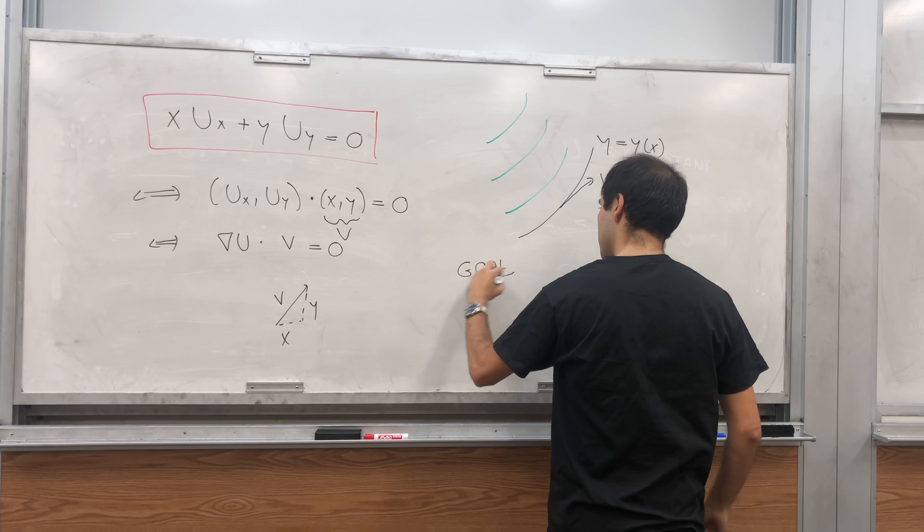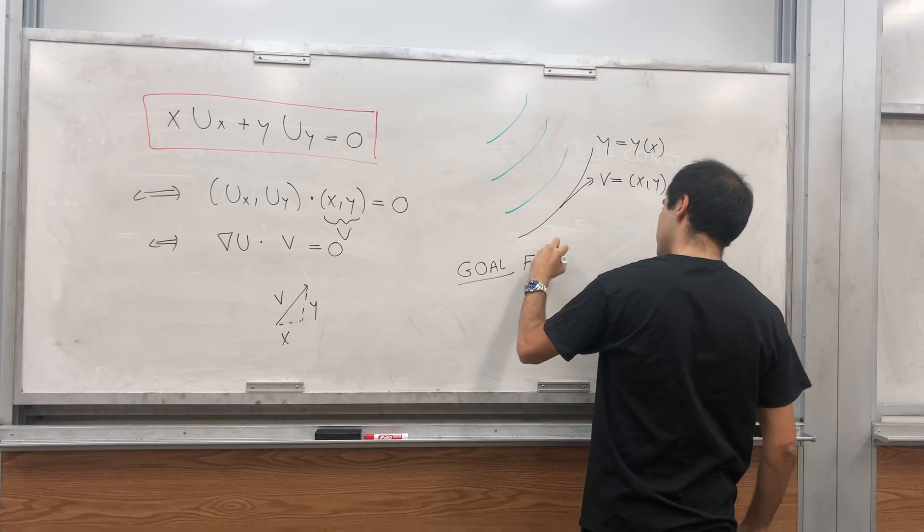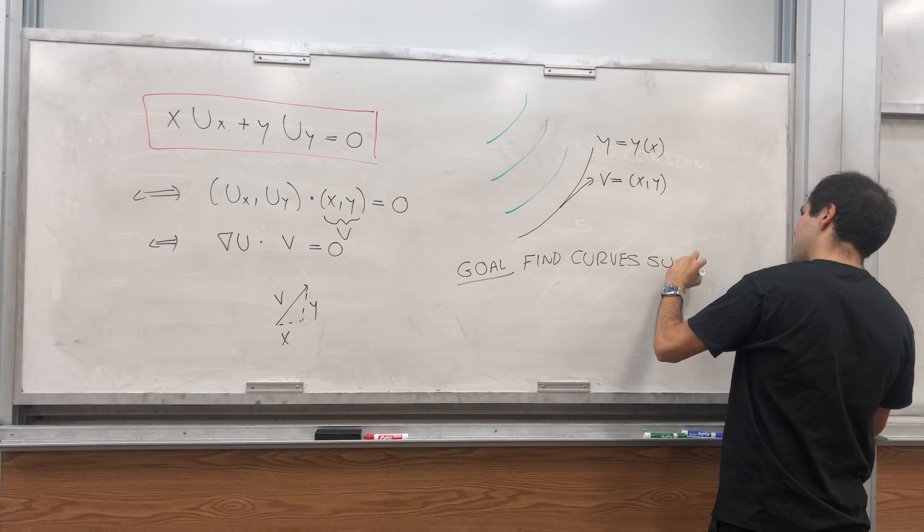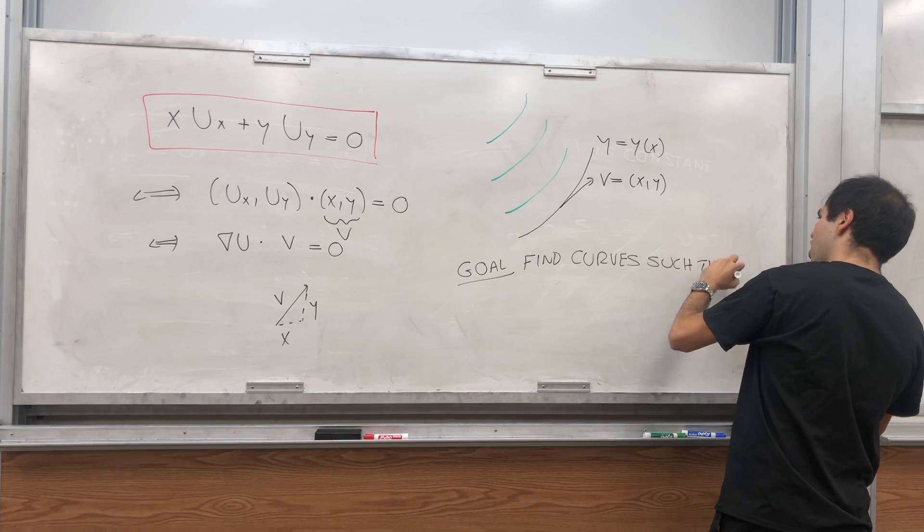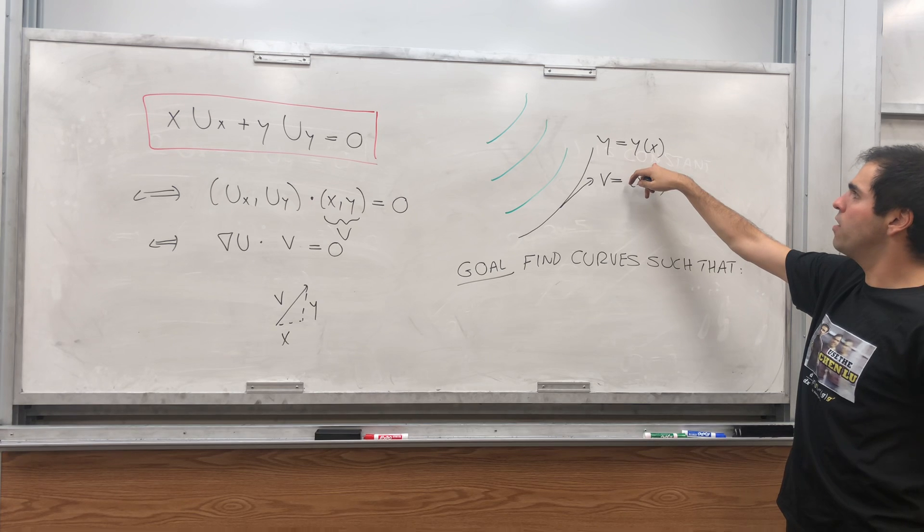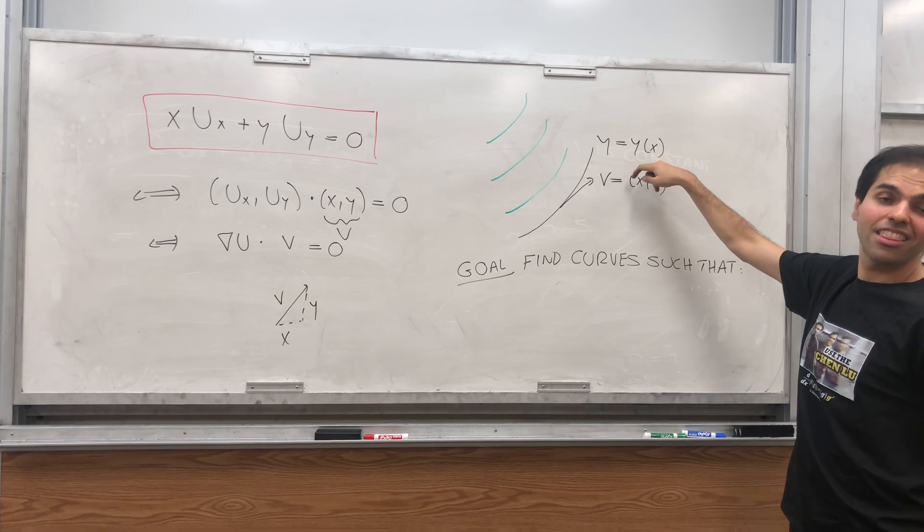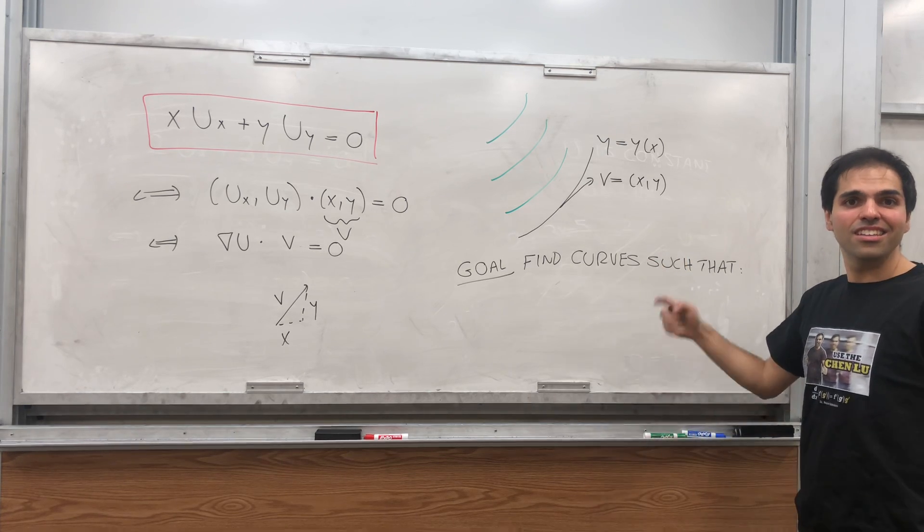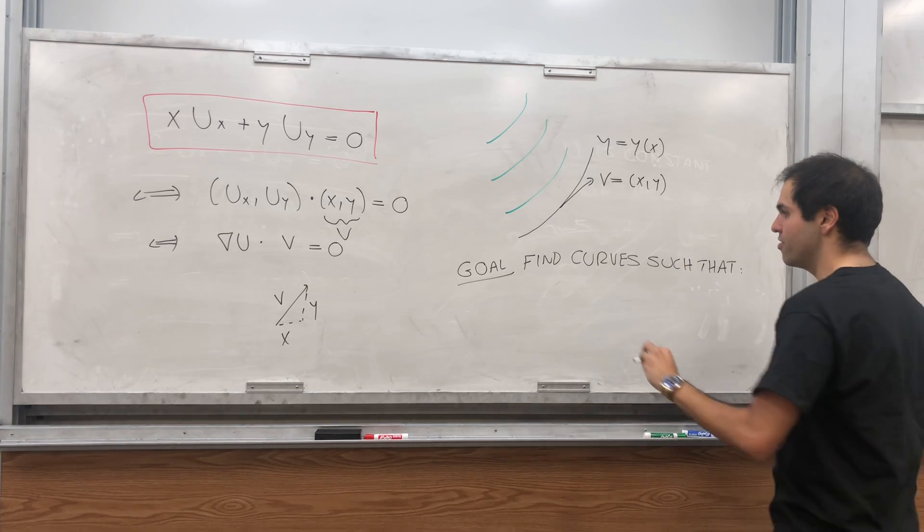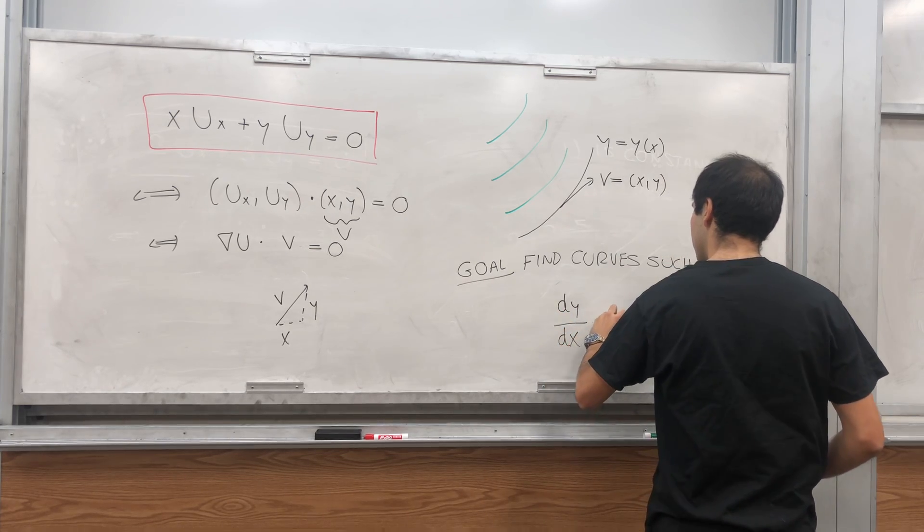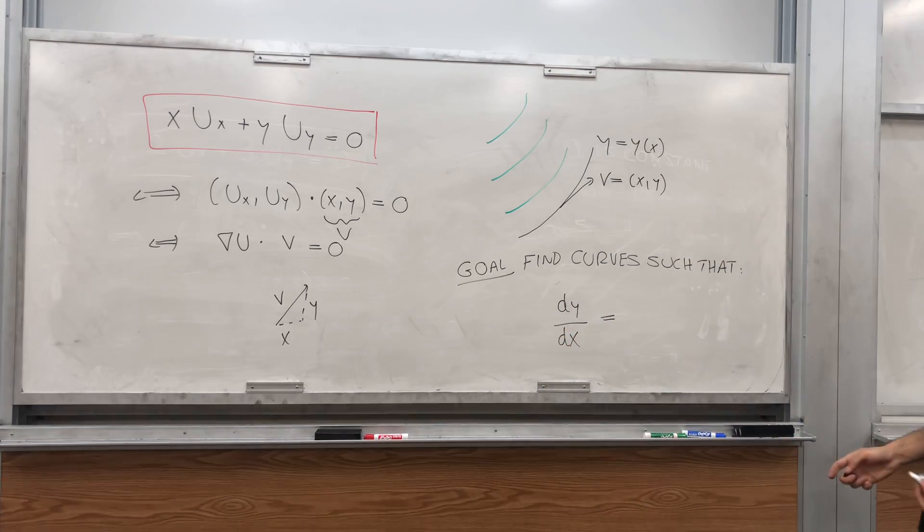So what we want to find, go find curves such that the following is true. On the one hand, what is the slope of the tangent line on this curve? By calculus, the slope should be the derivative, dy over dx.